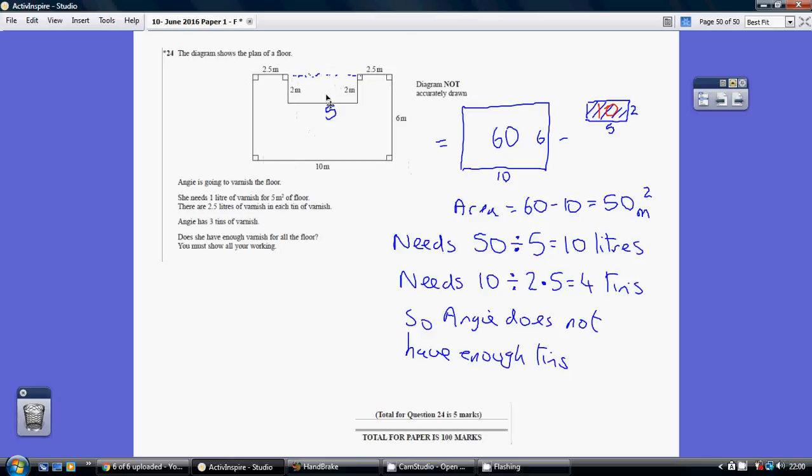So this rectangle here has got a base of 5 and a height of 2. 2 times 5 is 10. So this shape here comprises the overall 60 less this little bit of 10 which is 50 metres squared.